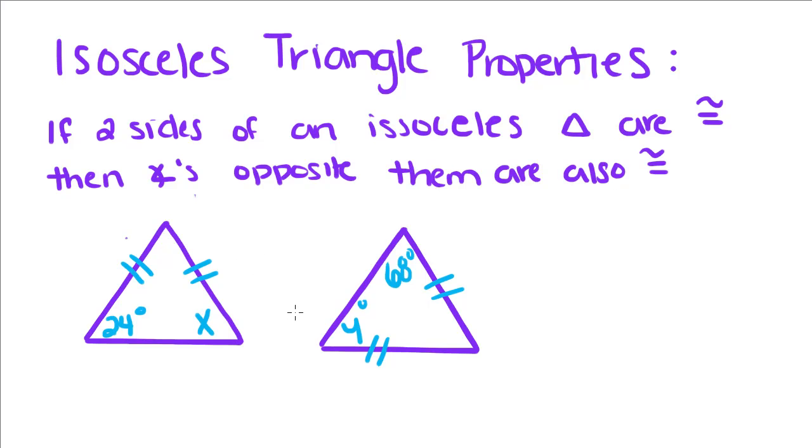So this side is congruent to this side of this triangle. That means that the angle across from this side and the angle across from this side are equal. So if this angle equals 24, that must mean that x also equals 24.